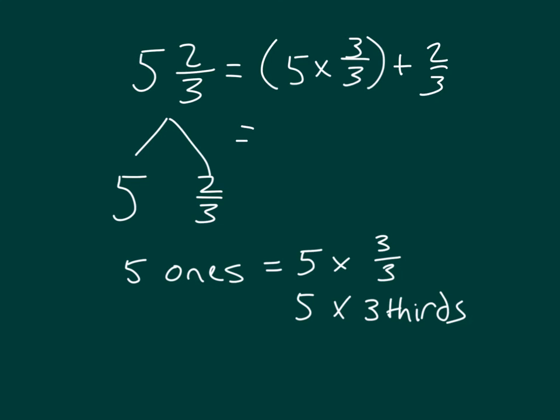Again, 5 times 3 thirds. Count with me. 3 thirds, 6 thirds, 9 thirds, 12 thirds, 15 thirds. And then after we write out that 15 thirds, we better add in the 2 thirds as well, which does equal 17 thirds.